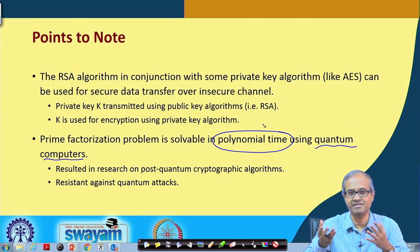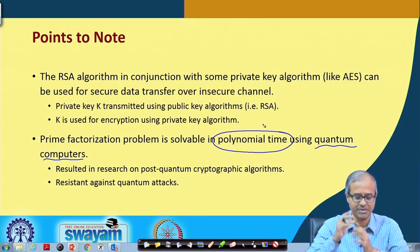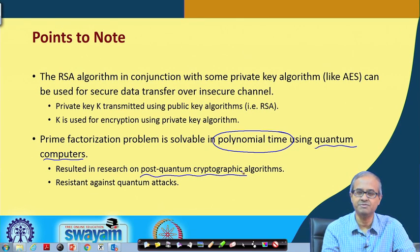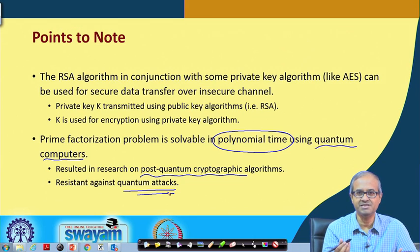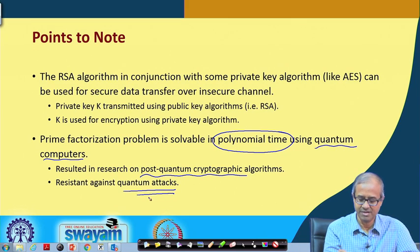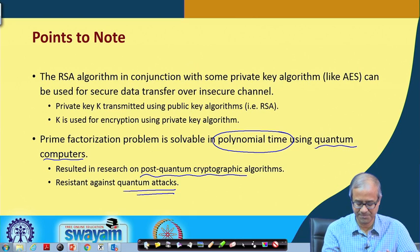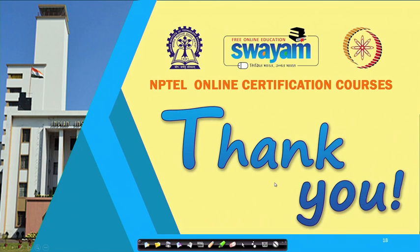So there is a lot of research on something called post-quantum cryptographic algorithms, which are supposed to be resistant against attacks using a quantum computer - quantum attacks. Some companies are already coming up with protection against this kind of quantum attacks and are upgrading their encryption and decryption infrastructure using such methods. With this we come to the end of this lecture, where we discussed about public key cryptography - in particular the RSA algorithm - and finally talked about some of the possible future weaknesses of RSA once a reasonably sized quantum computer becomes available. Thank you.